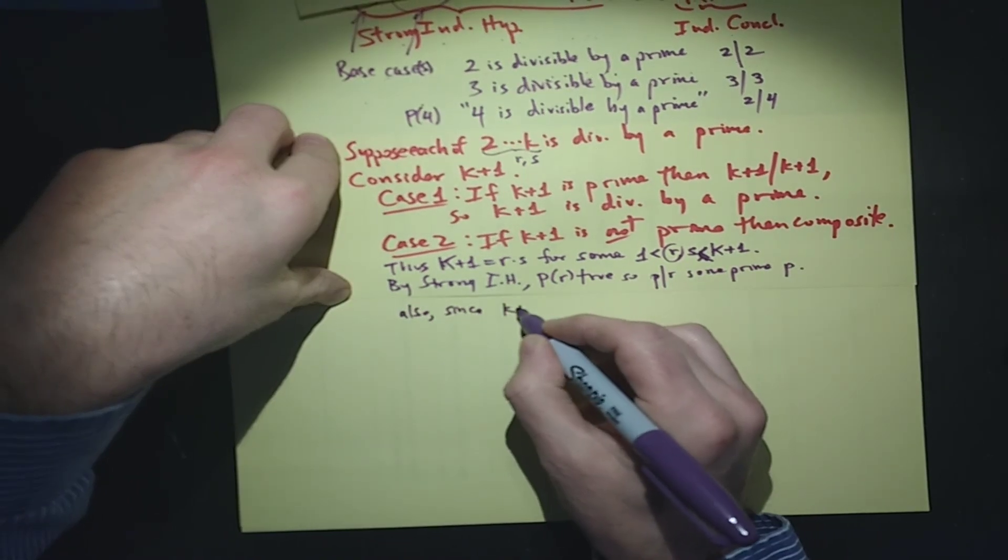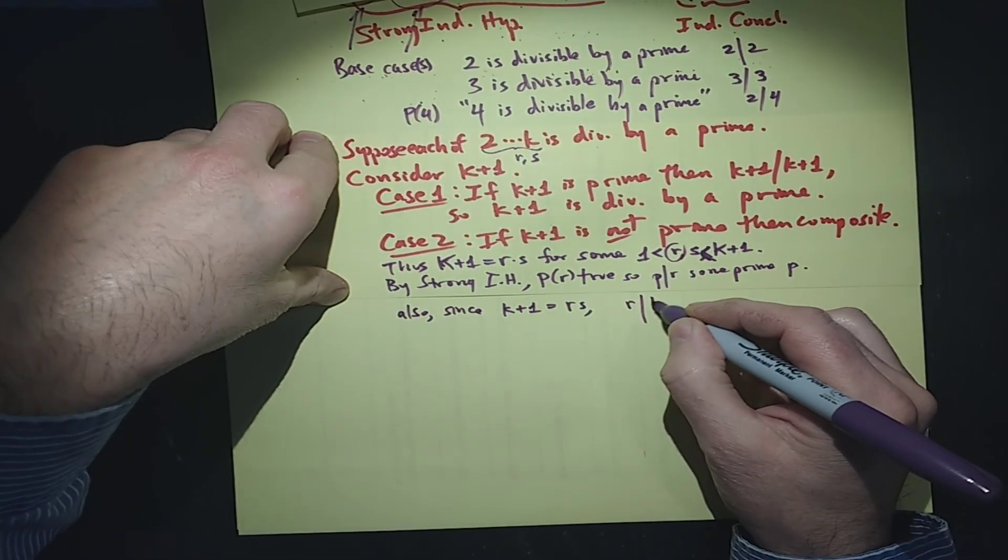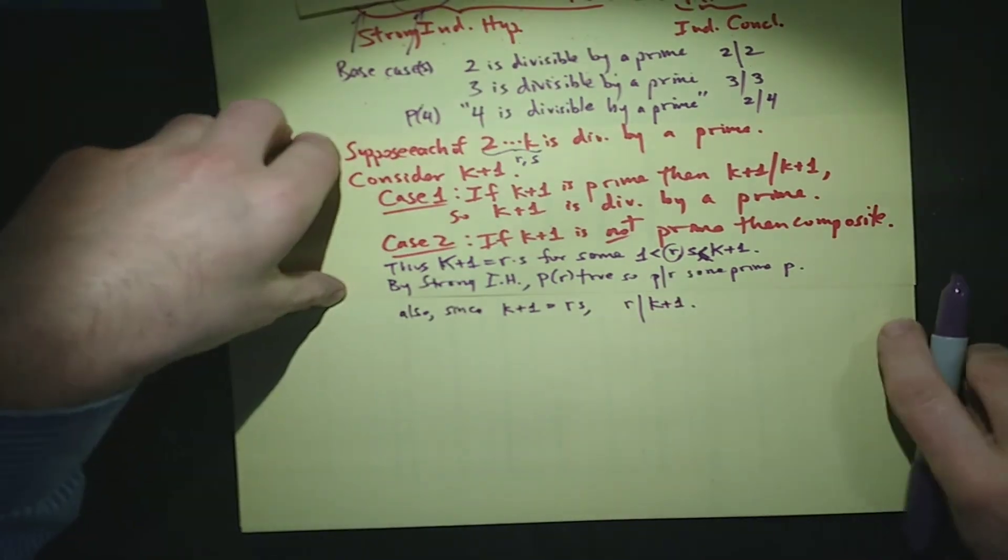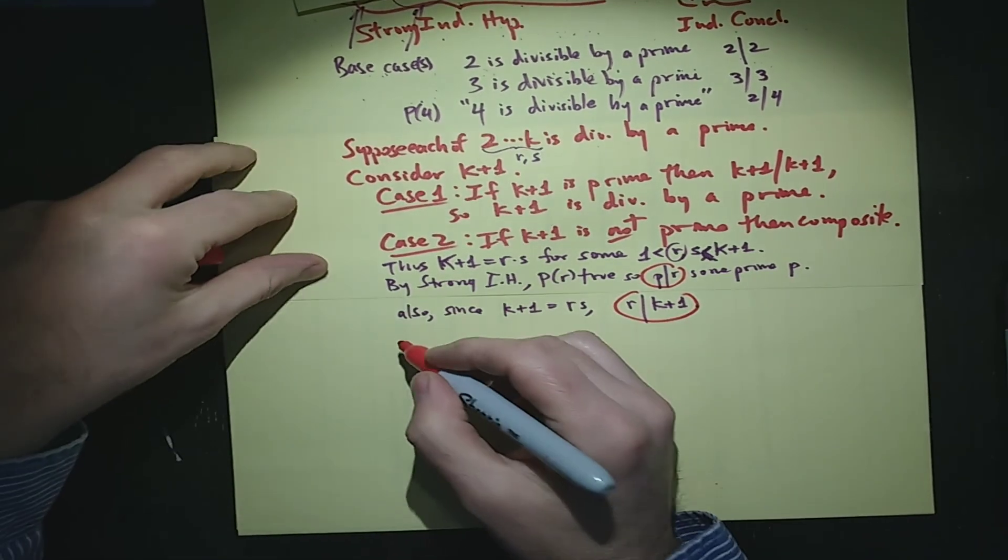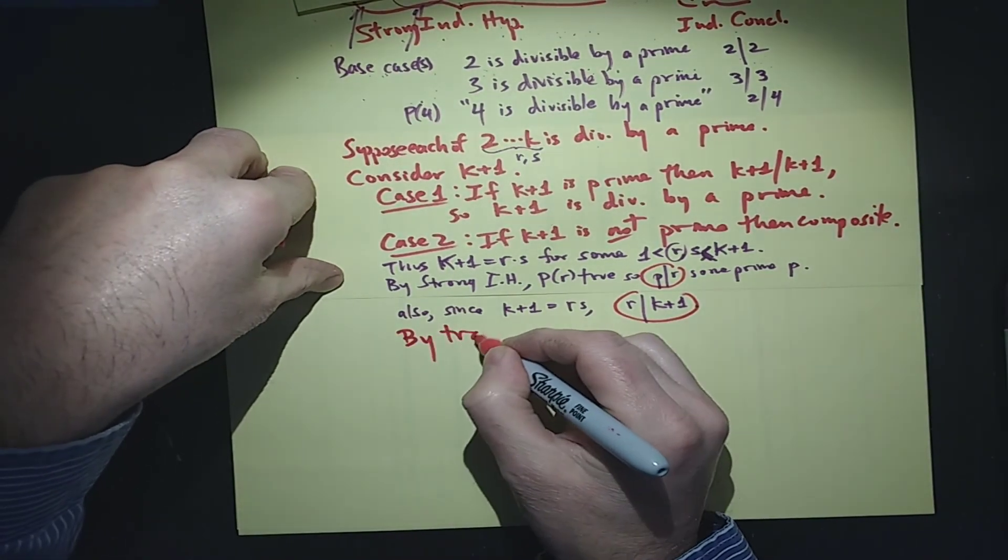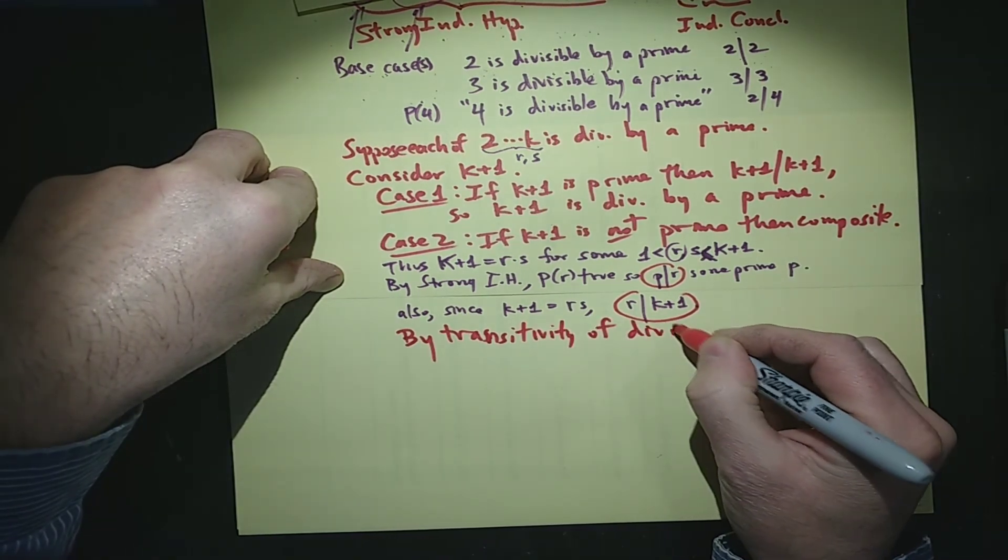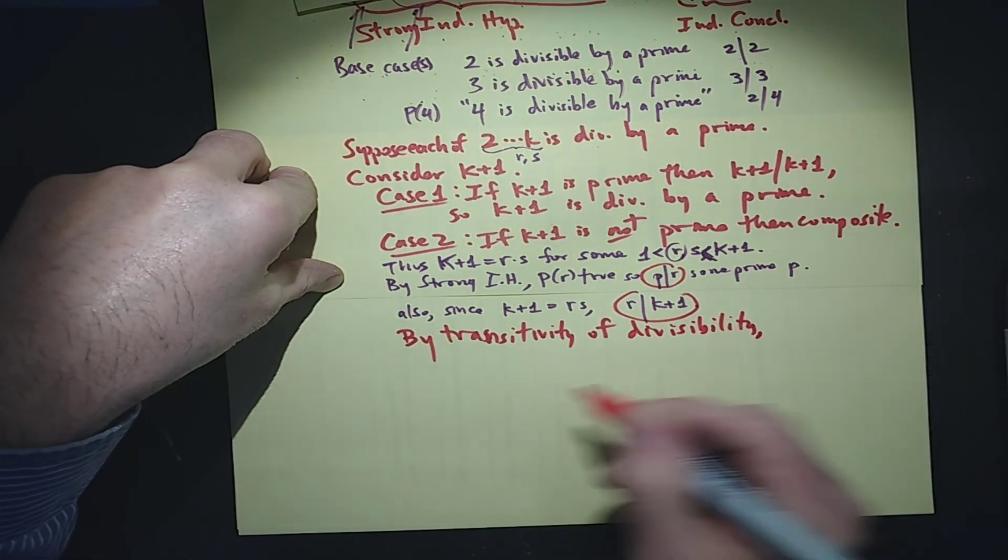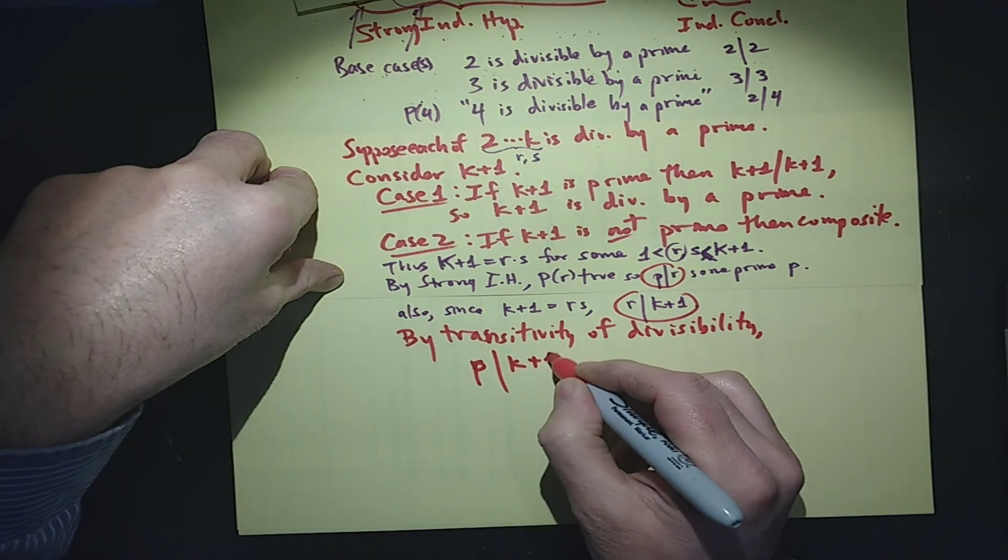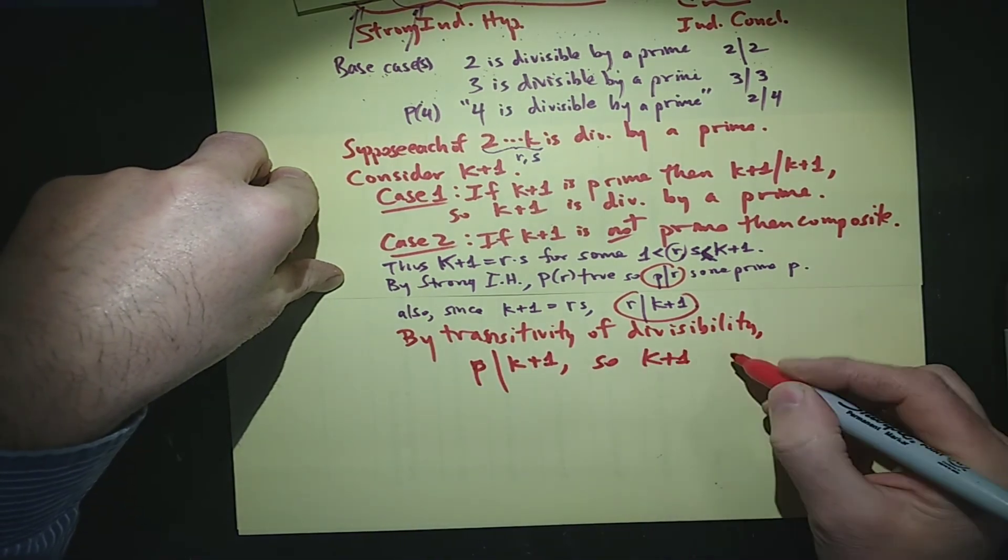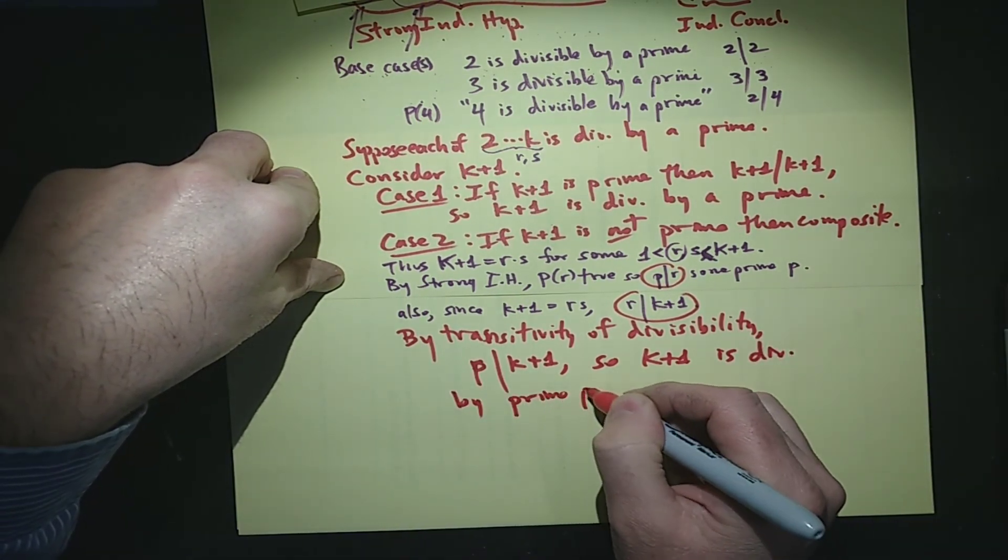Also, since k+1 is r times s, that means that r is a divisor of k+1. And putting these together, p is a divisor of r, r is a divisor of k+1. By the transitivity of divisibility, we know that r, that p, must be a divisor of k+1. So k+1 is divisible by prime p.